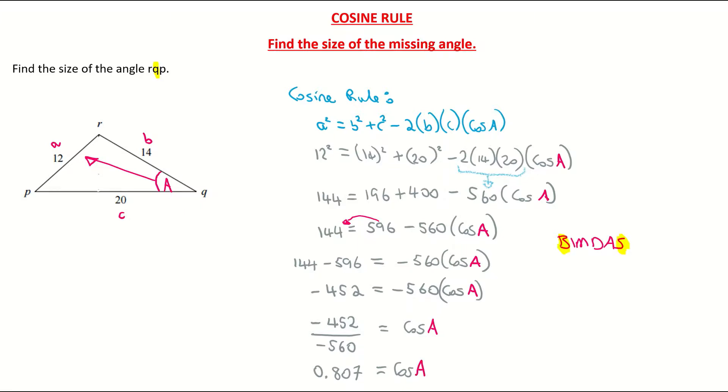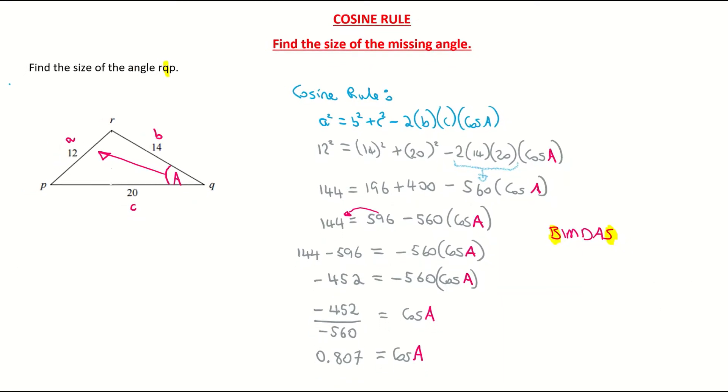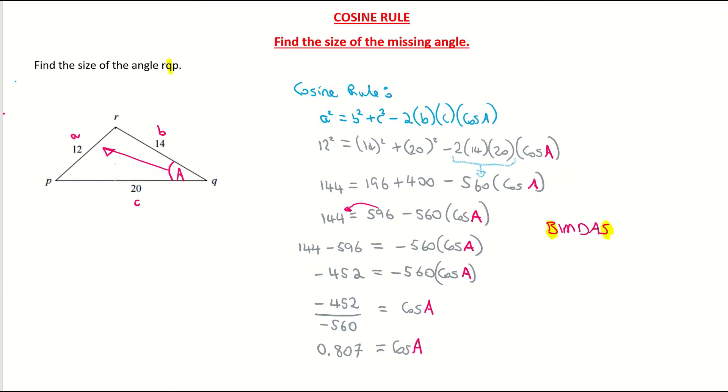I now need to isolate the A on its own. So what I'm going to do now is I'm going to find the cos inverse of 0.807. So in other words, what I'm doing now is I'm basically moving over the cos. So it's like I'm moving it over, and when the cos comes over, it becomes cos inverse or cos with the minus one. So it's cos inverse, just put that little negative one above it, of 0.807, and that is equal to my angle A.